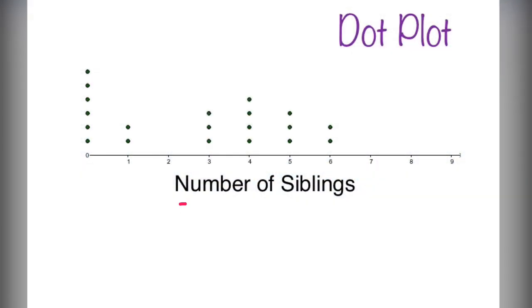How do we read a dot plot again? Well, we ask people, how many siblings do you have? The first thing we need to look at is all the dots on the graph actually represent each person that was asked.